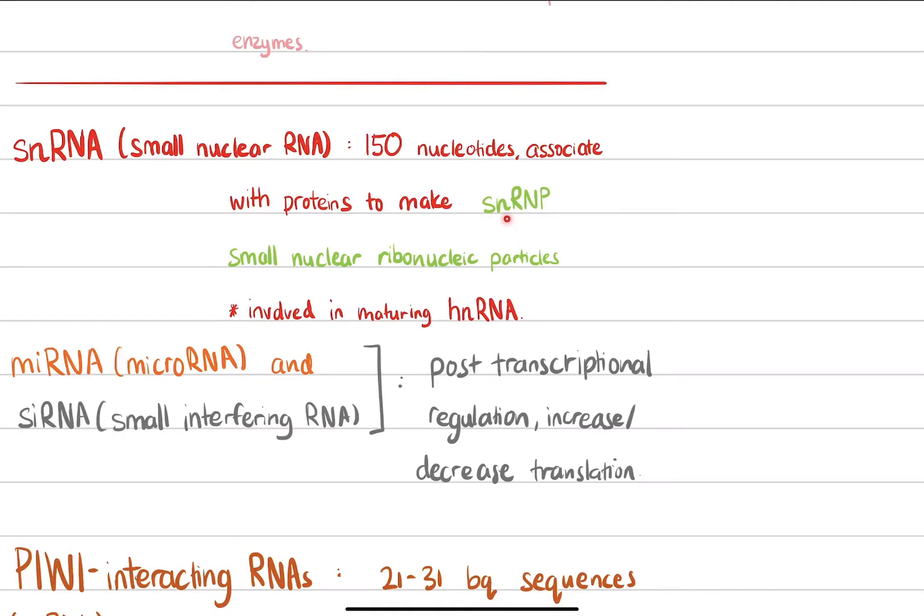Small nuclear RNA is composed of 150 nucleotides and is associated with small nuclear ribonucleoprotein particles. This is involved in the maturing of heteronuclear RNA, which will help you understand how that happens.